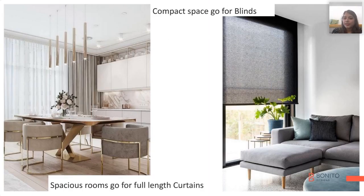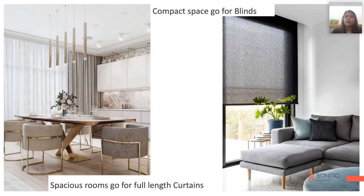For smaller places, we will be going for blinds as that looks more sleeker — if you refer to the right side image. Coming to the left-sided image, we have all end-to-end curtains. So say suppose we have spacious rooms, we should go for full-length curtains.